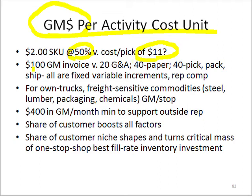If we had a $100 gross margin on an invoice, and we said okay, we have $20 of G&A cost per invoice, $40 of paperwork cost per invoice, $40 to pick, pack, and ship, then we had rep comp on top of it, and we start to realize how we lose money.